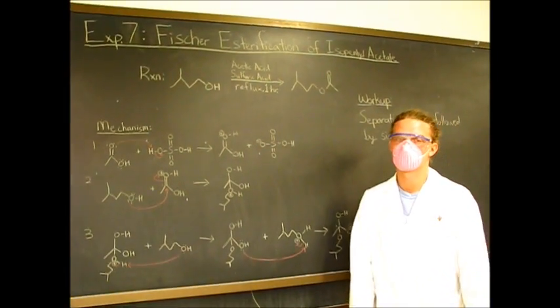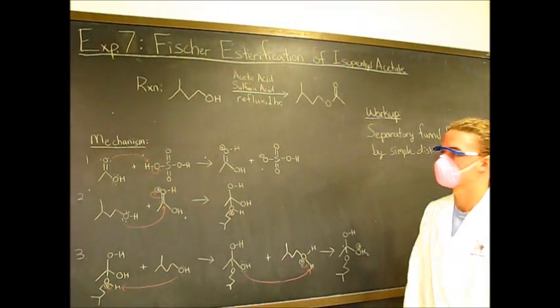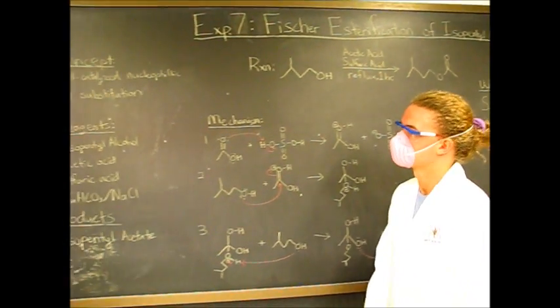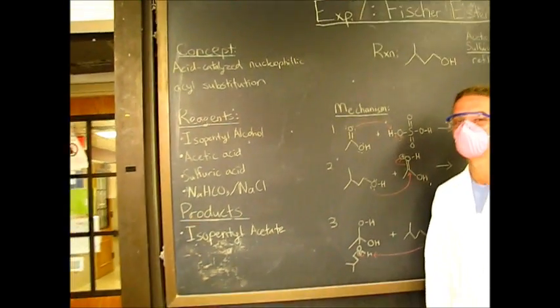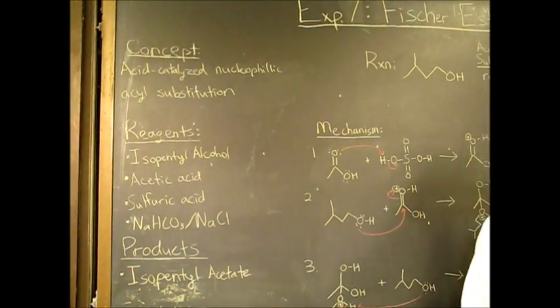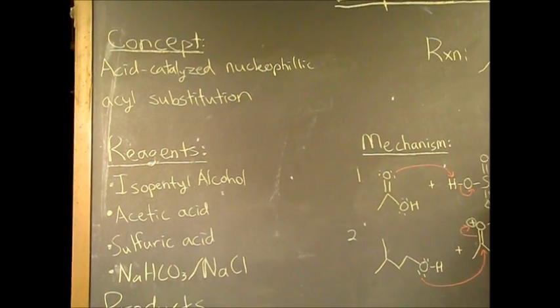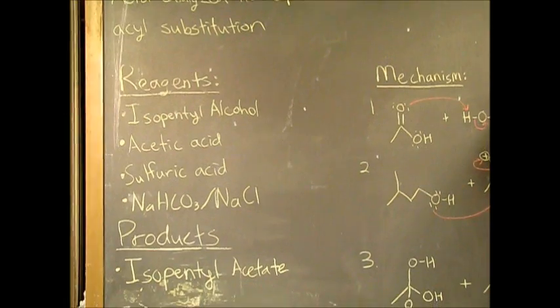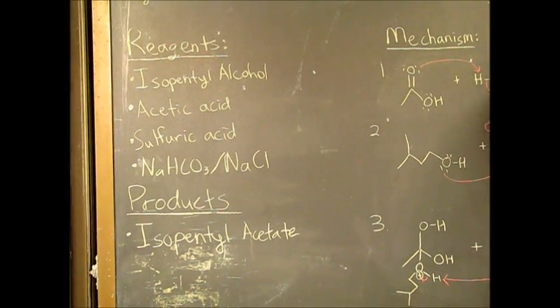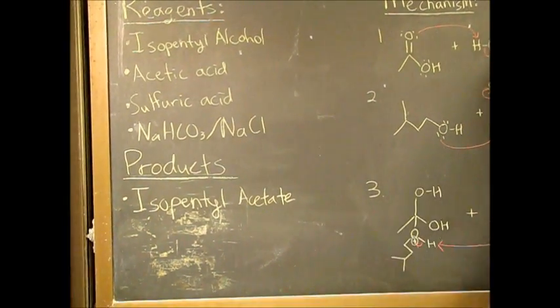Alright guys, today we're going to be doing the Fischer esterification of isopentyl acetate. This reaction is an acid-catalyzed nucleophilic acyl substitution. We're going to be using isopentyl alcohol, acetic acid, sulfuric acid, and then we're going to wash with sodium bicarbonate and sodium chloride, and then we're going to yield isopentyl acetate.